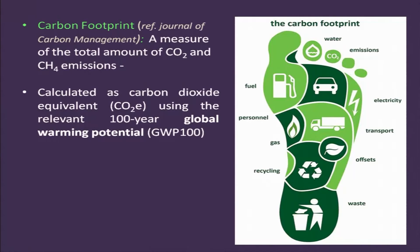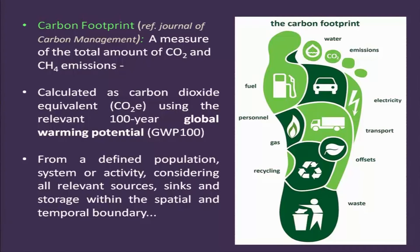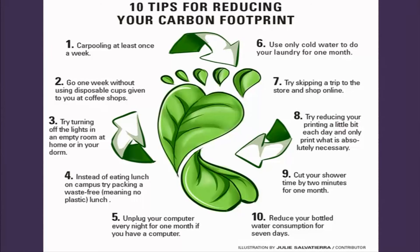Greenhouse gases have been calculated as carbon dioxide equivalent using the relevant 100-year global warming potential from a defined population, system, or activity — considering all relevant sources, sinks, and storage within the specified temporal boundaries. To reduce carbon production, there are 10 tips for reducing the carbon footprint, since what we are mostly worried about is the carbon being produced.